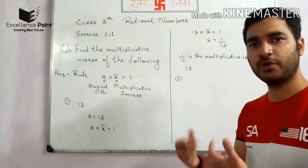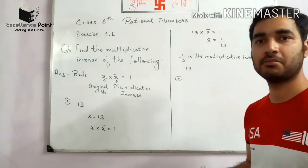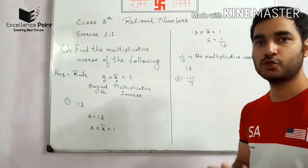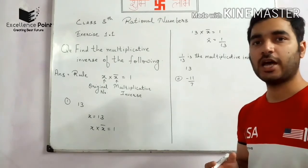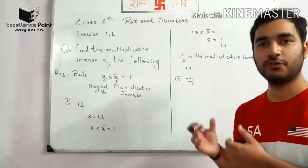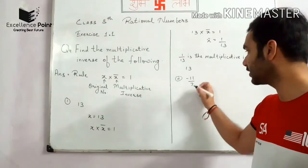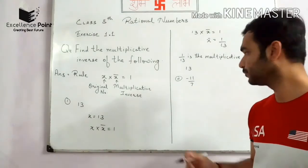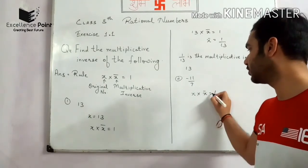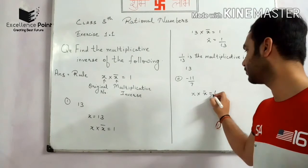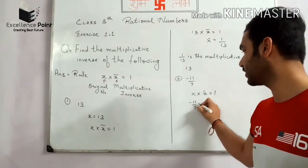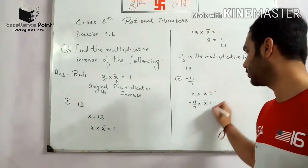For the second example, suppose the number is minus 11 upon 7. Note that these are not the NCERT questions exactly — I am taking examples so you can solve the NCERT question easily. So for x equal to minus 11 upon 7, x into x-bar equals 1. Putting the value of x: minus 11 upon 7 multiplied by x-bar equals 1.